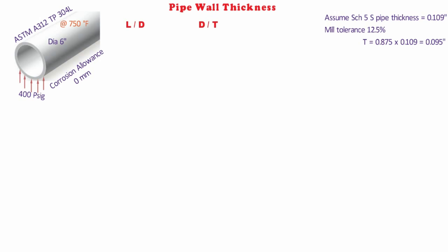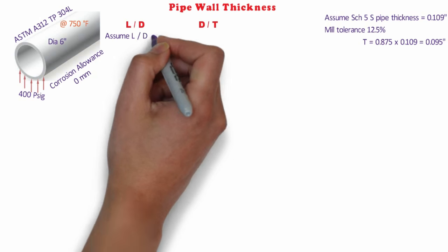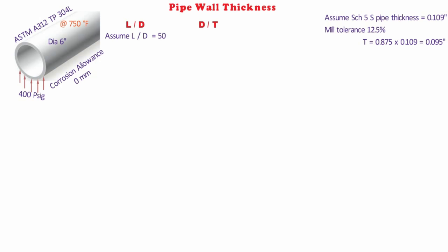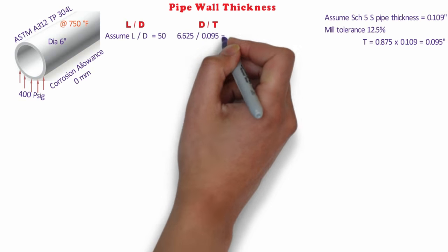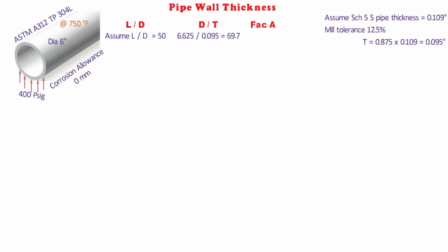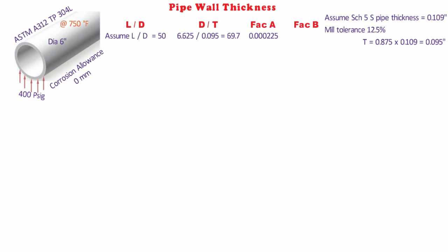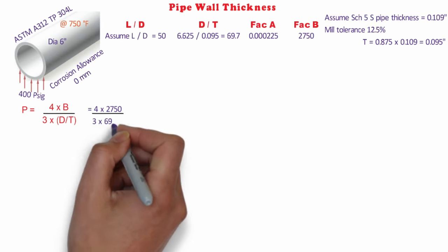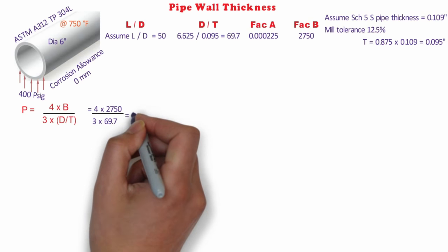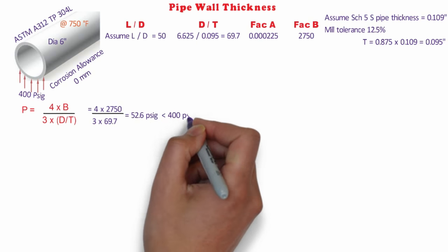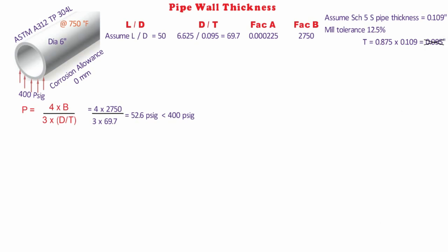Consider L/D₀ = 50 since L is unspecified. D₀/t = 6.625 / 0.095 = 69.7. From Graph G in HA-3, the value of factor A and B at 750°F are 0.000225 and 2,750 respectively. Therefore, allowable pressure Pa = 4/3 × B / (D₀/t) = 4 × 2,750 / (3 × 69.7), so Pa = 52.6 psig. This is less than the design pressure given.